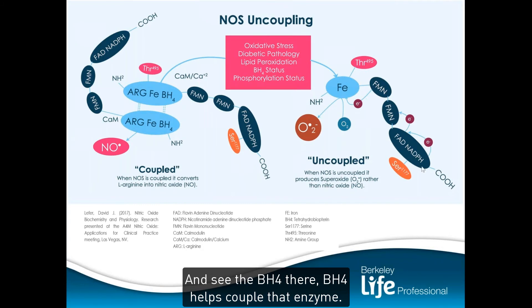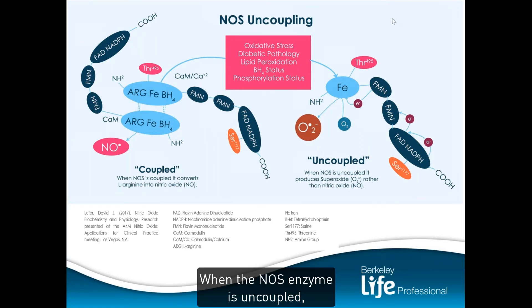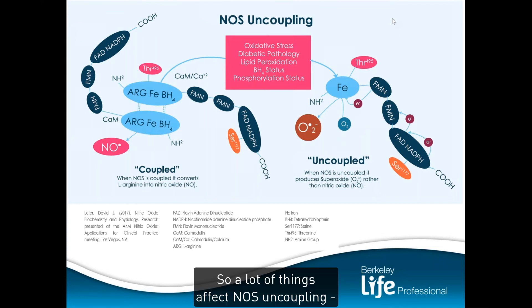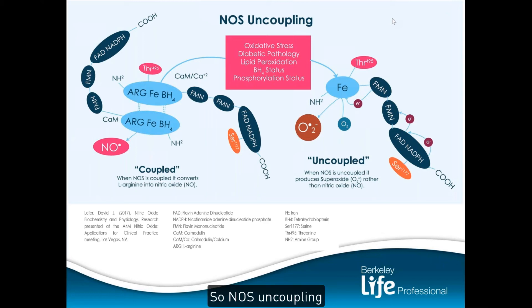See the BH4 there — BH4 helps couple that enzyme. When the NOS enzyme is uncoupled, that electron transport is shuttled down to oxygen and it makes superoxide. A lot of things affect NOS uncoupling: oxidative stress, diabetic pathology, lipids — so NOS uncoupling increases superoxide production.